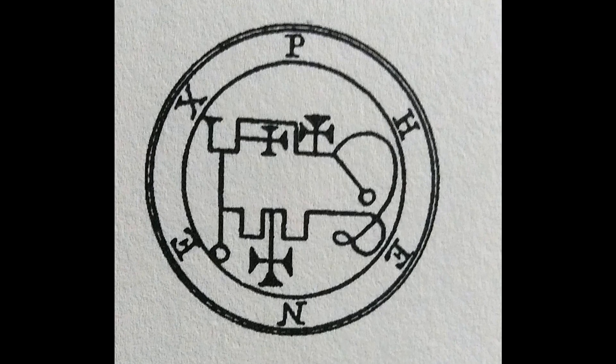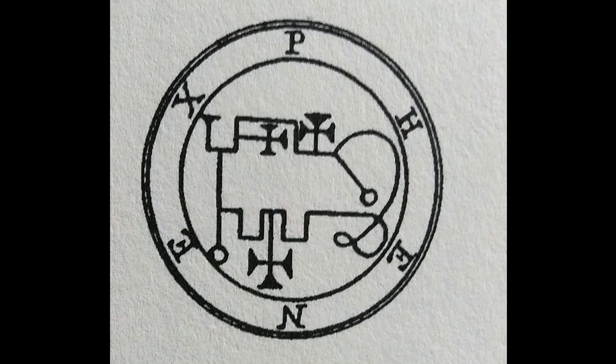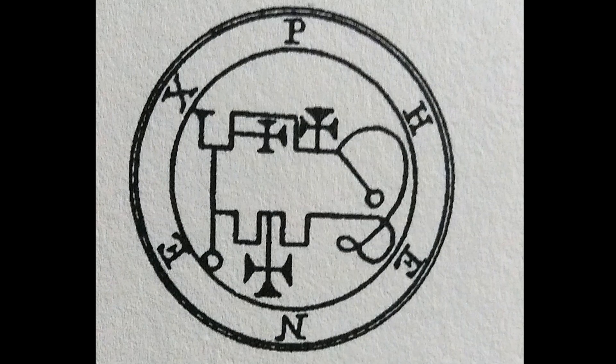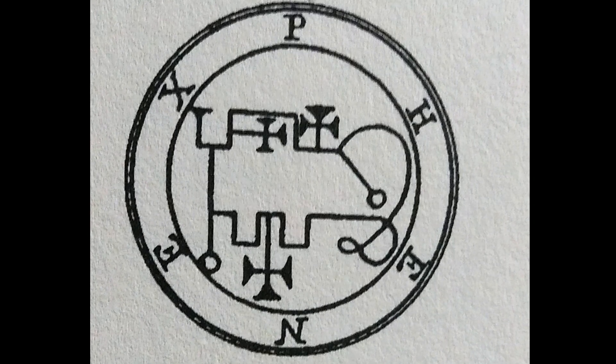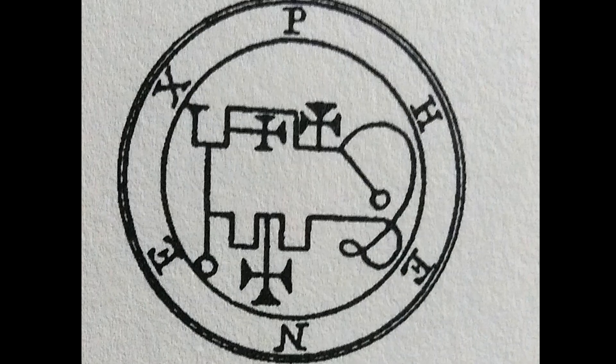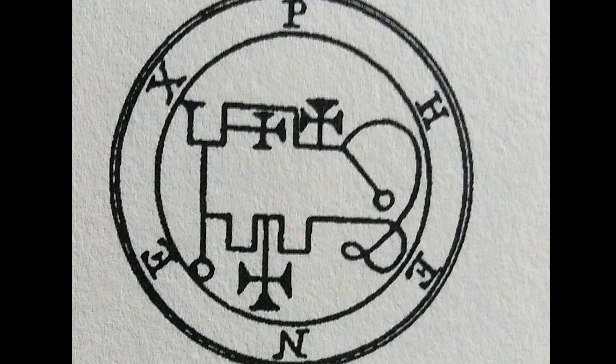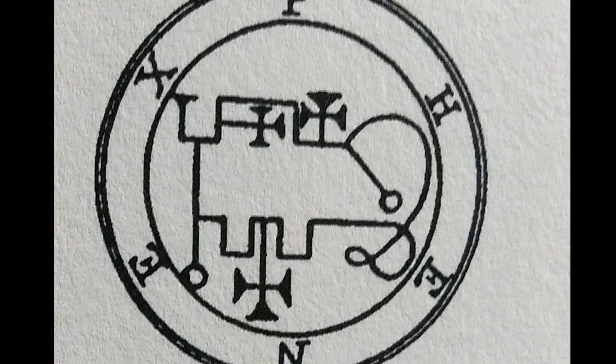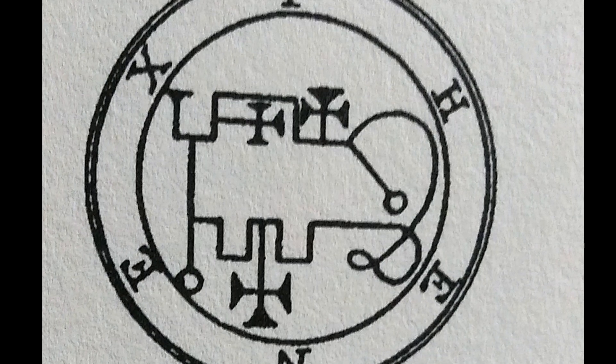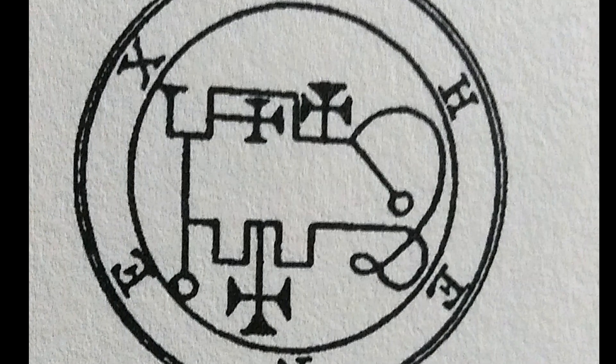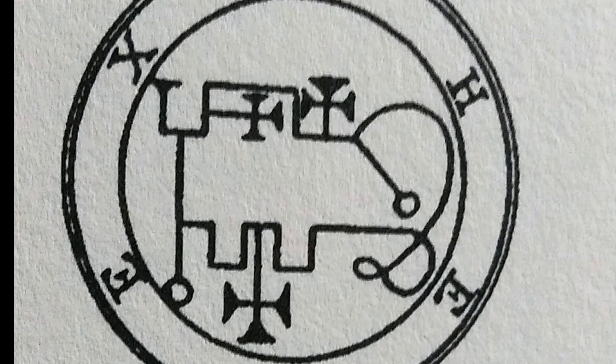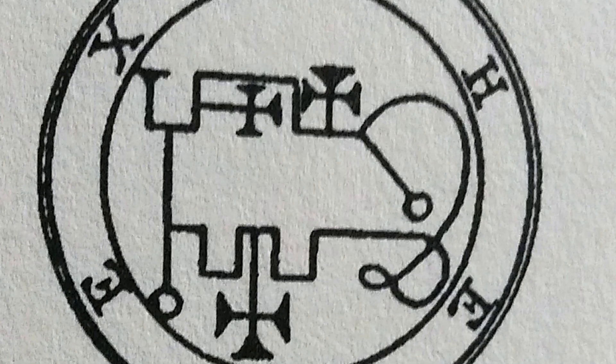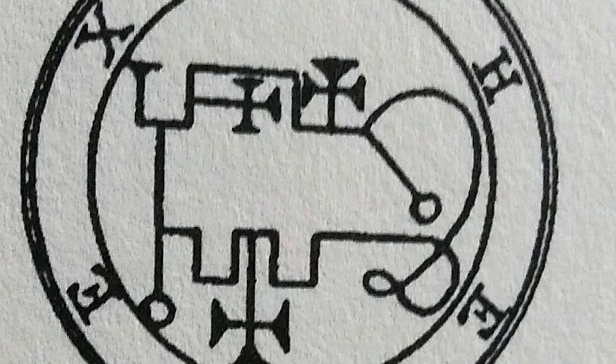Phoenix, the 37th spirit of the Ars Goetia, is a Great Marquis of Hell. His best dates for summoning are March 21st to March 30th and September 23rd to September 27th. The archangel for Phoenix is Raphael. The tarot card is the Two of Swords, planet is Venus and Moon, metal is copper and silver, element is fire and air, plant is rose, incense is jasmine.